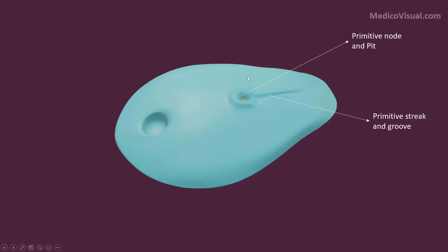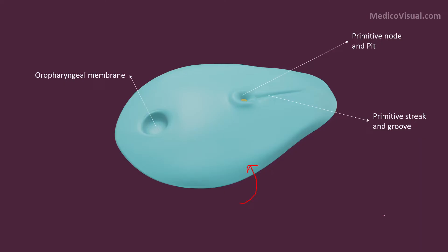We have discussed all these details in the lecture of gastrulation. Now let's focus our attention on this special structure here. In the ectoderm there is a circular depression, and this is the primordium of the future mouth of the baby — that is why it is called the oropharyngeal membrane, or according to some authors the buccopharyngeal membrane. Now I'm going to rotate this embryo and see what is at the underside.